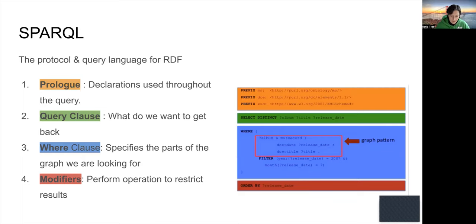There are also additional modifiers — the last part of your queries. Modifiers like FILTER can appear inside the WHERE clause. These modifiers allow you to perform operations to restrict certain results. We will get into details in the next slides.